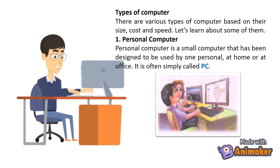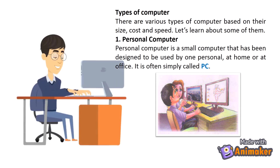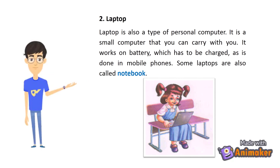Types of computer. There are various types of computer based on their size, cost, and speed. Personal Computer: a small computer designed to be used by one person at home or at the office — it is often simply called a PC. Laptop: a laptop is also a type of personal computer. It is a small computer that you can carry with you. It works on a battery which has to be charged, as is done with mobile phones. Some laptops are also called notebooks.